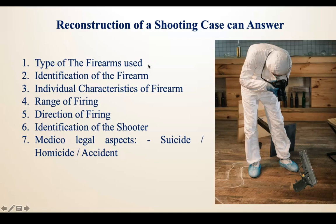Not all of these questions can always be answered. For example, even if the firearm is not present, we can still determine the type of firearm used and the range of firing. However, identification of the shooter depends on gunshot residue on the shooter's hand, fingerprints on the firearm, and many other factors. Many questions can be answered, and the case can often be solved with just a few.